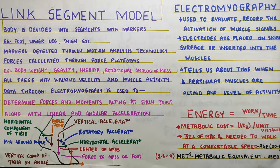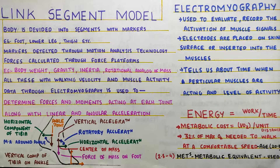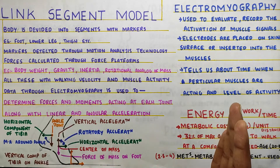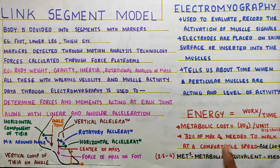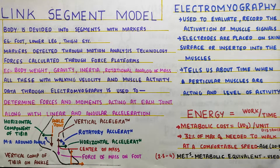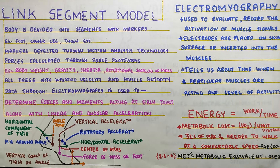Next, we come to energy, which is basically work done in unit time. In gait, energy can be measured by two ways. One is metabolic cost — that is VO2 per unit distance. For example, 32% of VO2 max is needed to walk a comfortable distance at the age of around 20 to 30. Another way to measure energy is through METs, that is metabolic equivalent, with an average value of 2.5 to 4 METs in walking.